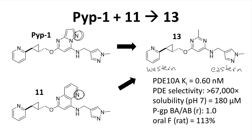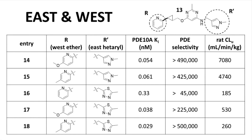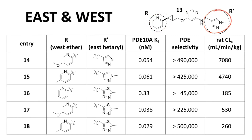With a very promising core, the team turned its attention to optimization of the left and right parts of the structure—the Western ether and the Eastern heteroaryl group. I genuinely love when papers refer to parts of molecules through compass points; it shows a human side to research scientists. The R group is the aromatic ring on the ether side chain; the R' group is the azole ring on the right. The compounds in this table show pairs of structures with three different pyridyl R groups and two different azole R' groups, the pyrazole and the thiodiazole. Compound 18 has the best on-target potency at 29 picomolar, best selectivity relative to other PDEs, and nearly the lowest clearance in the rat, so compound 18 was selected to advance.